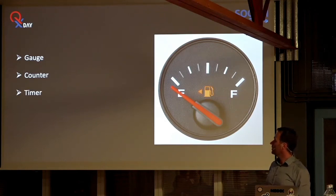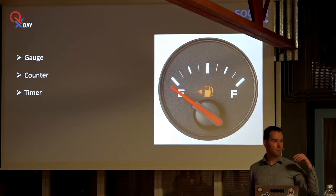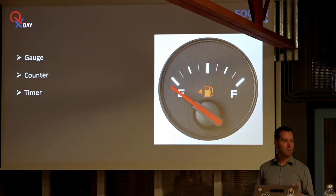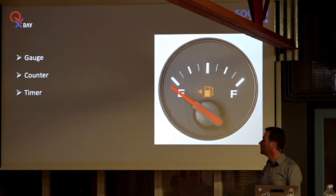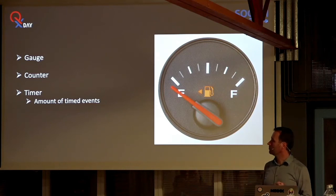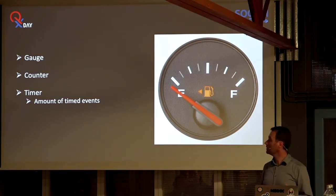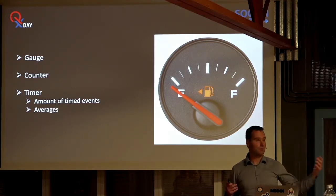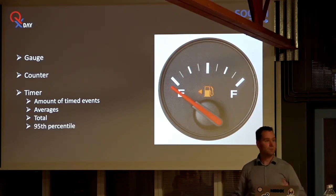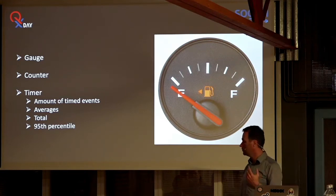The third metric type is a timer. You start a timer and you end the timer, and those two combined give the time a timer took — that might be a database request or something else. You get a bit extra when using timers: the amount of timed events, so it looks a bit like a counter. You can also get averages, total time, 95th percentile, or other statistically relevant numbers.